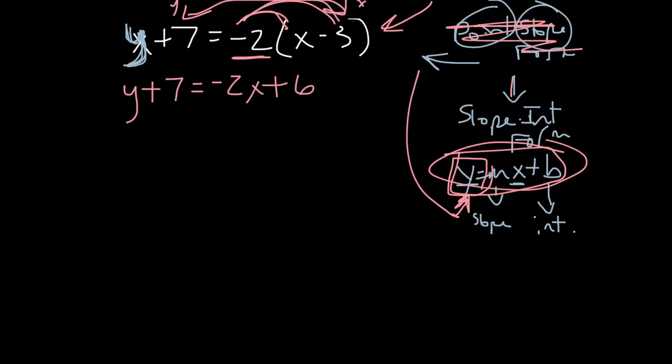All right, now we don't have y by itself so I need to get rid of what's over here with the y, which happens to be you little fella, number seven. How do I get rid of a positive seven? Subtract seven. Now I only have to subtract it from this which gets rid of it, and then I just subtract it from the regular number.